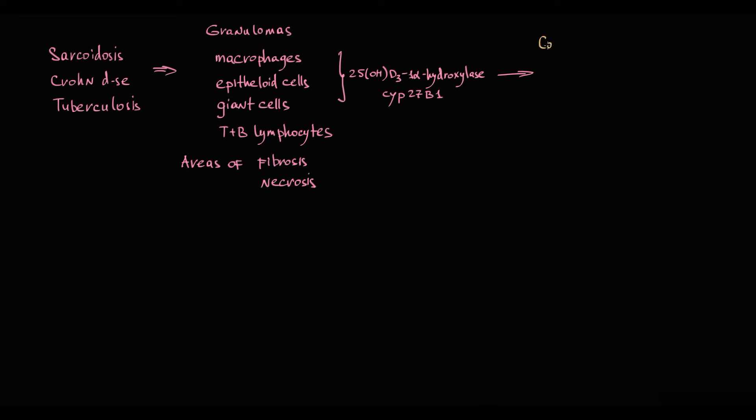This enzyme converts calcidiol to calcitriol, which is the active form of vitamin D. So basically, macrophages are capable of producing calcitriol. Calcitriol stimulates calcium absorption in intestine and kidney, and also mobilizes calcium from bone tissue. So calcitriol increases serum calcium level.